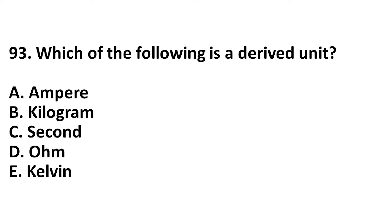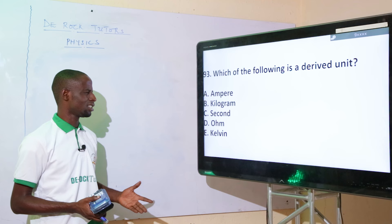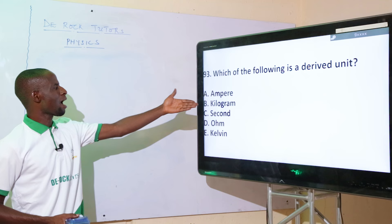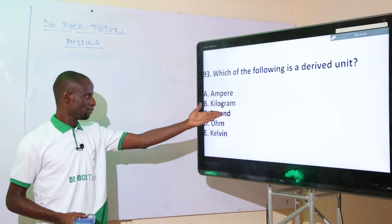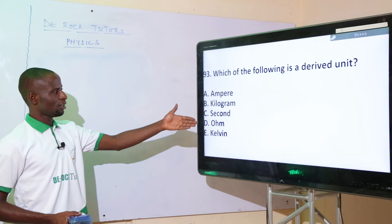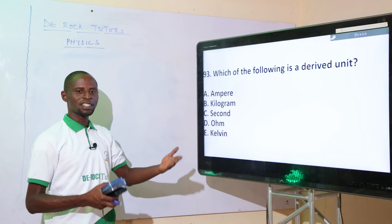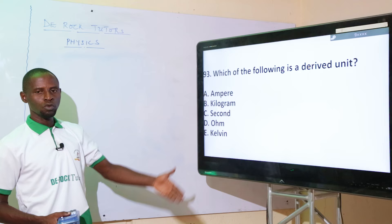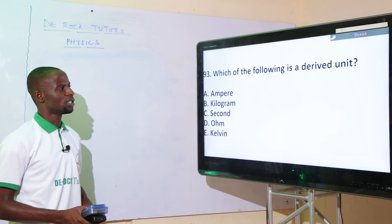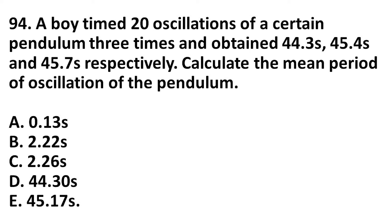Which of the following is a derived quantity? The seven fundamental quantities are mass, length, time, temperature, electric current, amount of substance, and luminous intensity. Option A: ampere — unit of current (fundamental). Option B: kilogram — unit of mass (fundamental). Option C: second — unit of time (fundamental). Option D: ohm — unit of resistance. Resistance is not a fundamental quantity, so ohm is a derived unit. Option E: Kelvin — unit of temperature (fundamental). The correct option is option D: ohm.